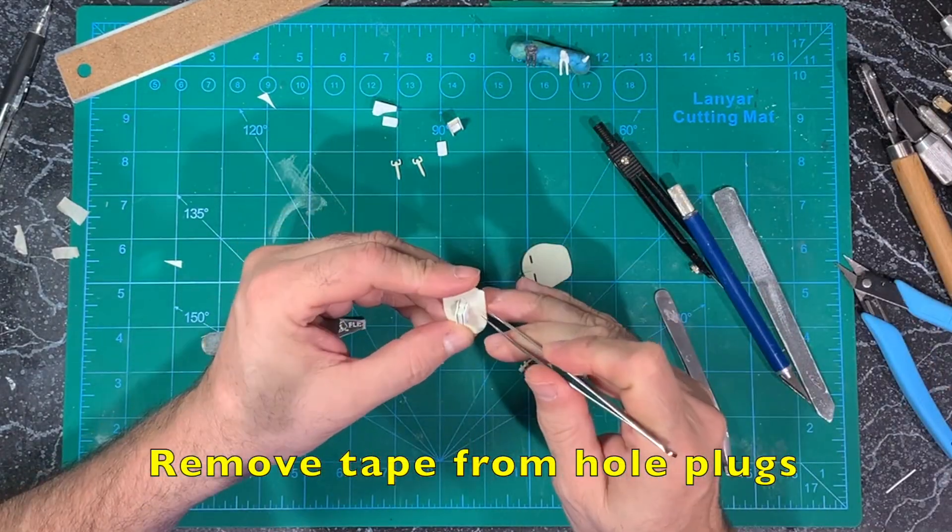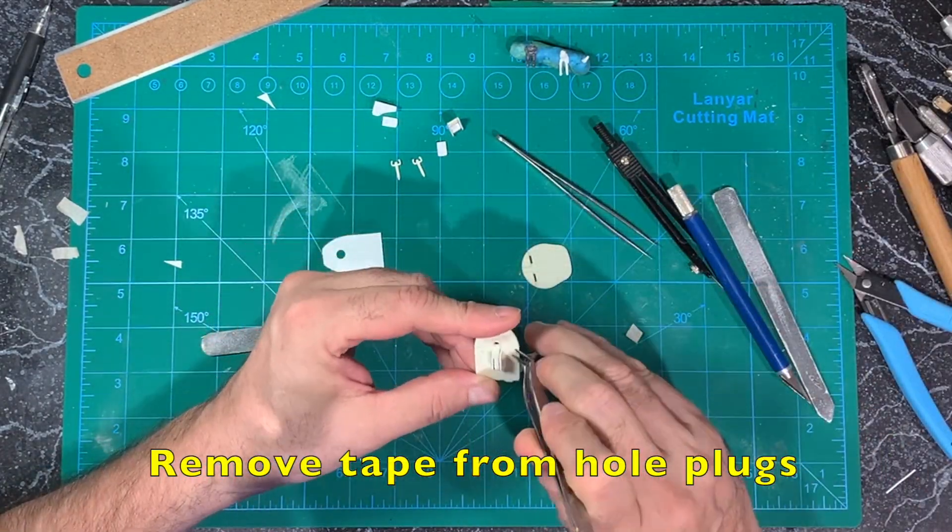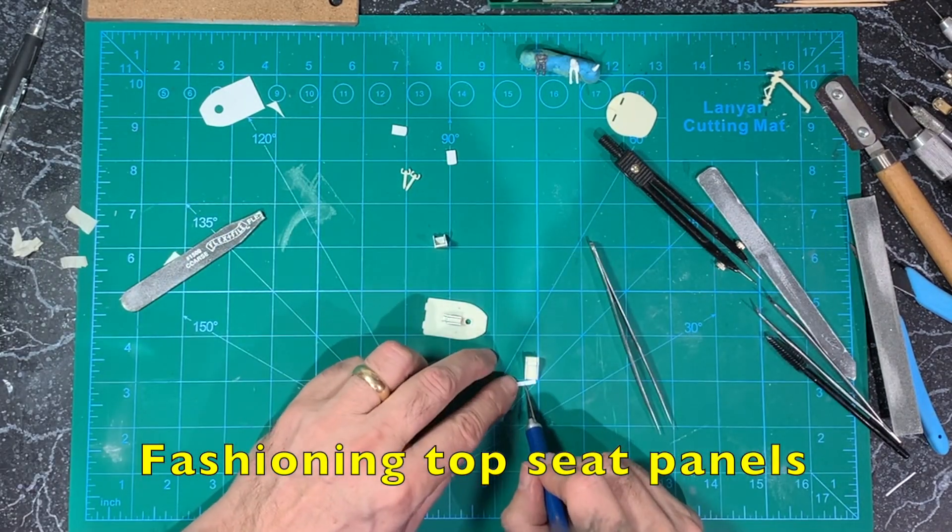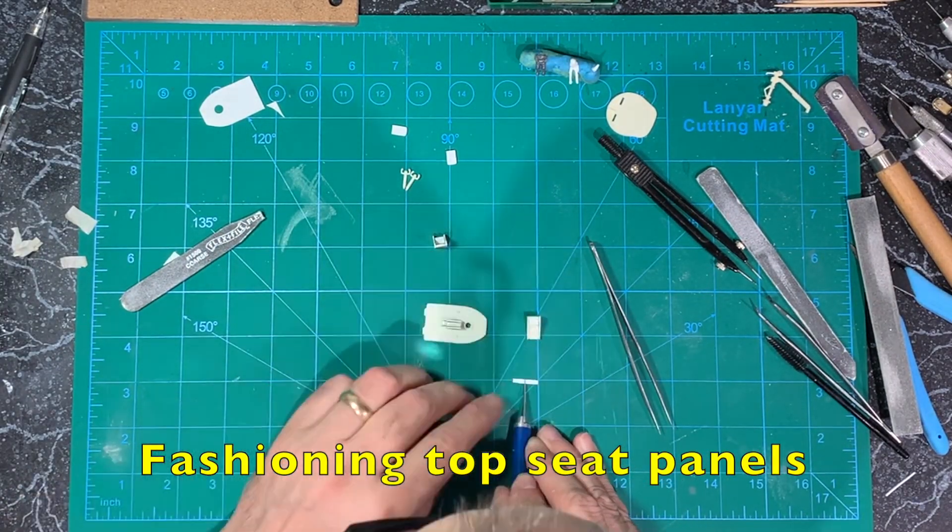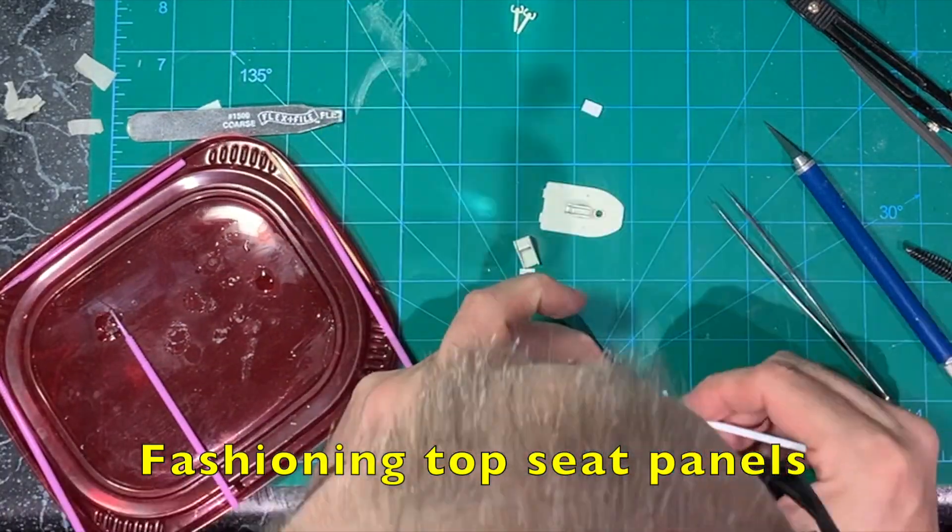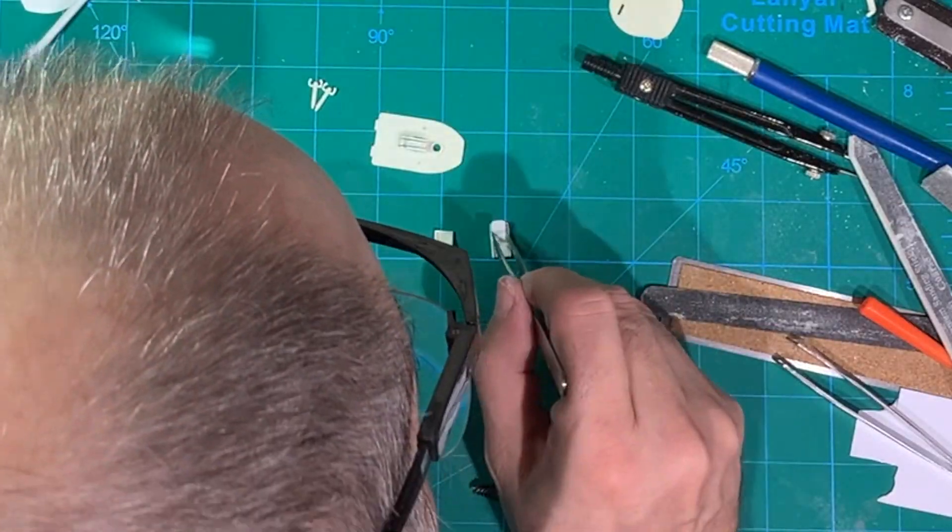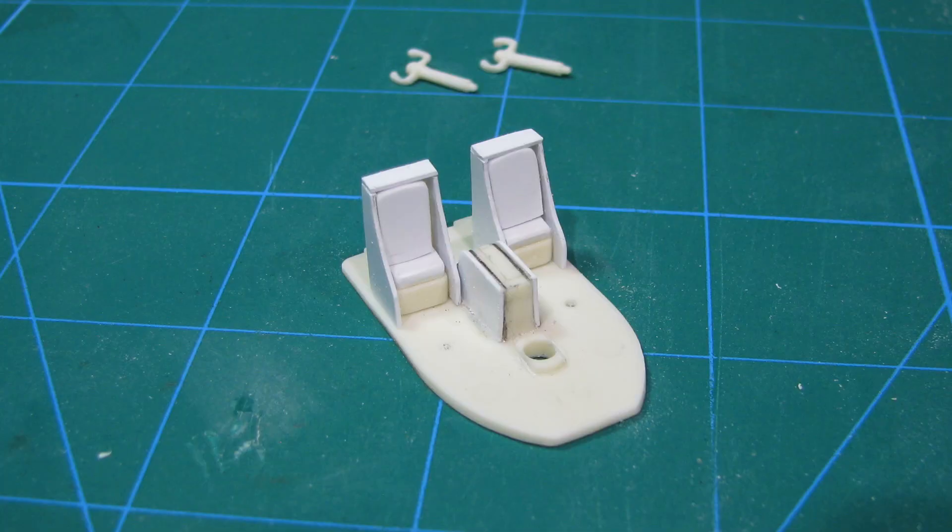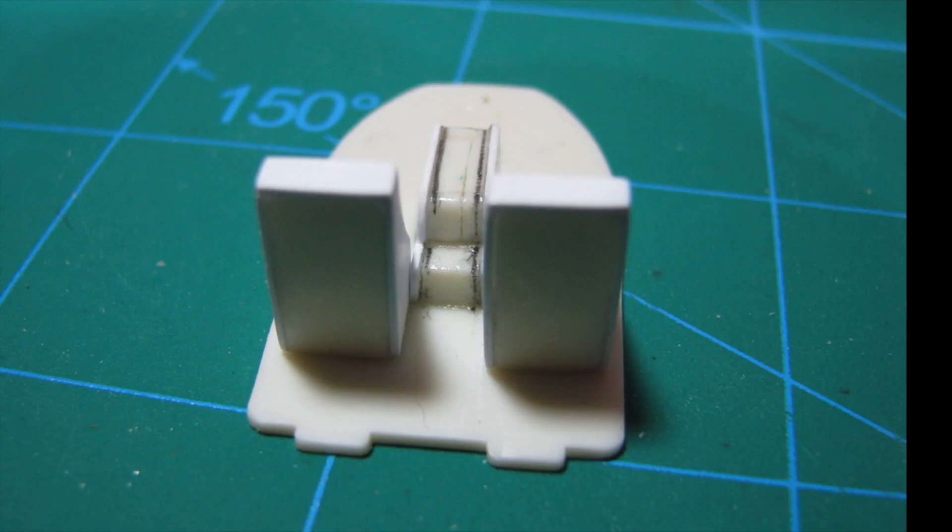Now dry, I remove the masking tape from above the floor hole plugs. To complete wrapping the seats with sheet styrene, I measure, mark, and cut top seat panels, and then glue them in place with medium super glue. Then I test fit the cushions again, sanded them a little more, and do a final test fit of the wrapped seats on the cockpit floor.